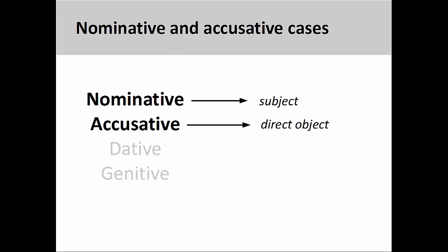The accusative case, among other things, is used in German to mark the direct object of a sentence. The direct object receives the action performed by the subject of the sentence, which is marked by the nominative case.